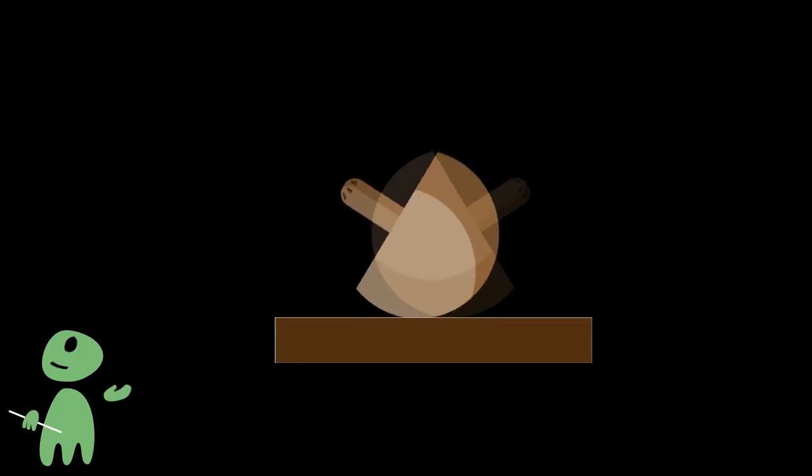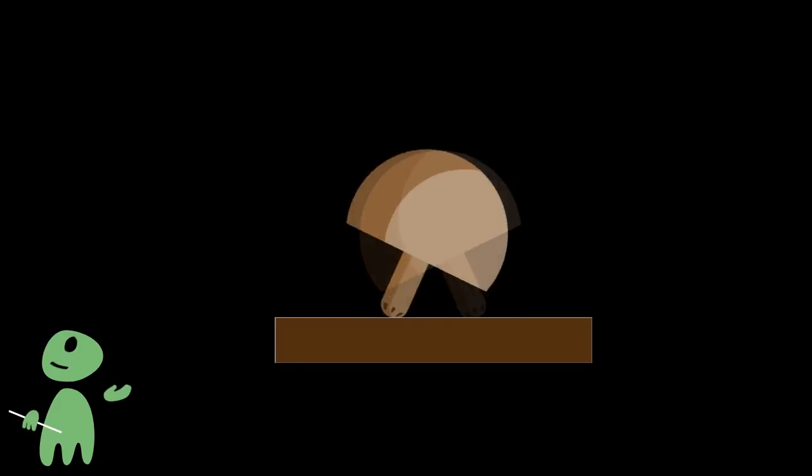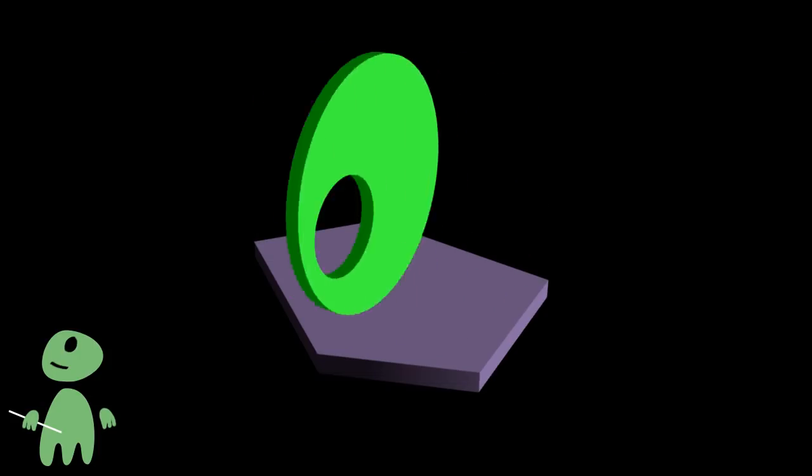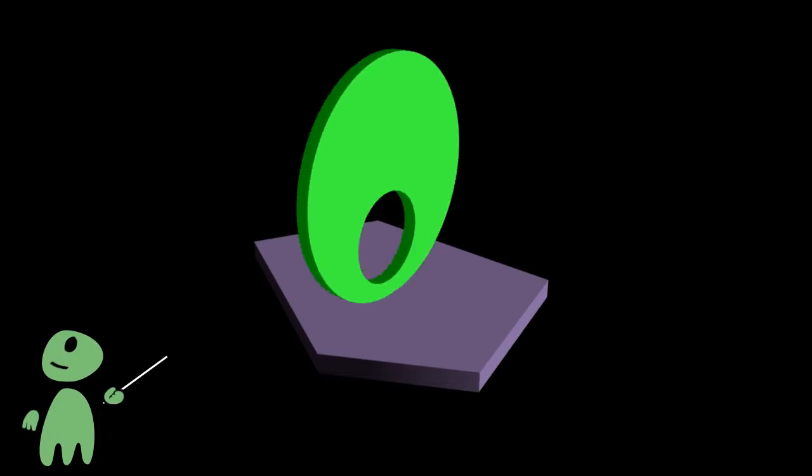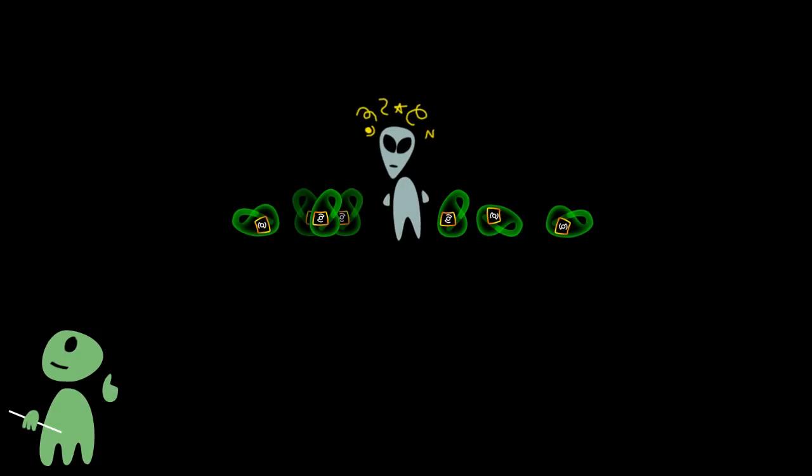By the way, humans have a toy called tippy top which basically works the same way. That's, in a nutshell, the reason why the disc turns heavy side up, and why saucer pilots should go easy on Sagittarian brandy. Thanks for watching.